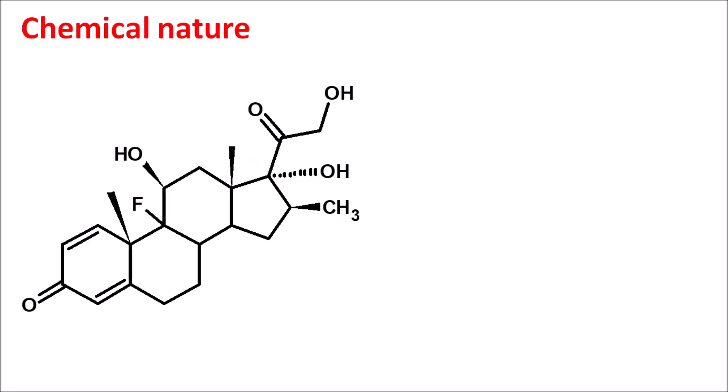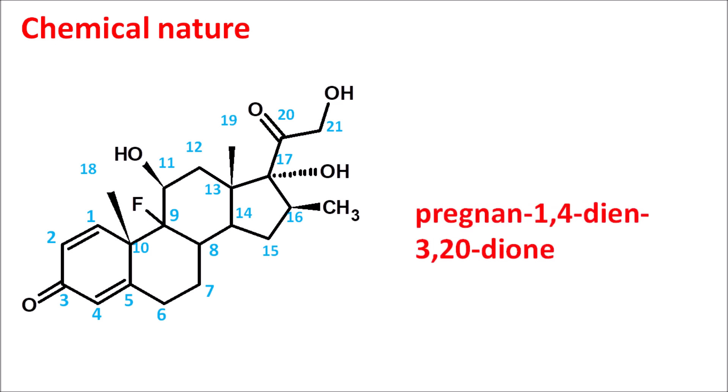This is the structure of betamethasone. It has a 21-carbon steroidal ring, so the suffix of the drug is pregnane. It has double bonds at the first and fourth positions, so we write this as pregna-1,4-diene. Ketone groups are present at the third and twentieth positions, giving us 3,20-dione. At the sixteenth position there is a methyl group attached by beta configuration, written as 16β-methyl — that is why betamethasone has the infix 'beta.'